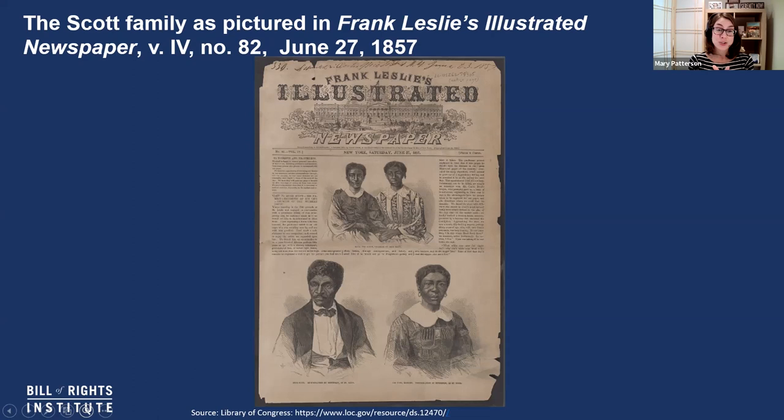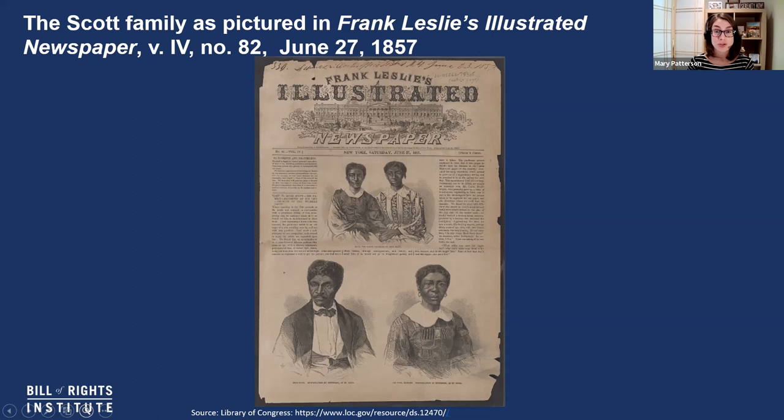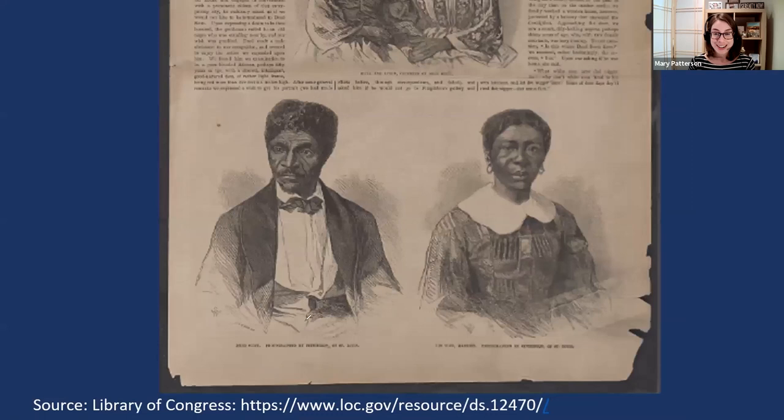Once again, we're thinking about how this image from Frank Leslie's Illustrated Newspaper in June of 1857 can give us a more complete picture of the Dred Scott case. Whenever you have a primary source, it's important to just look at it and make some observations before you go any further. If you're using the handout that comes with this video, go ahead and pause here and make some observations of your own. Here are some things that I notice. Right away, I notice this guy right here — Dred Scott. I think this picture is in every U.S. history textbook. It's very recognizable to me.